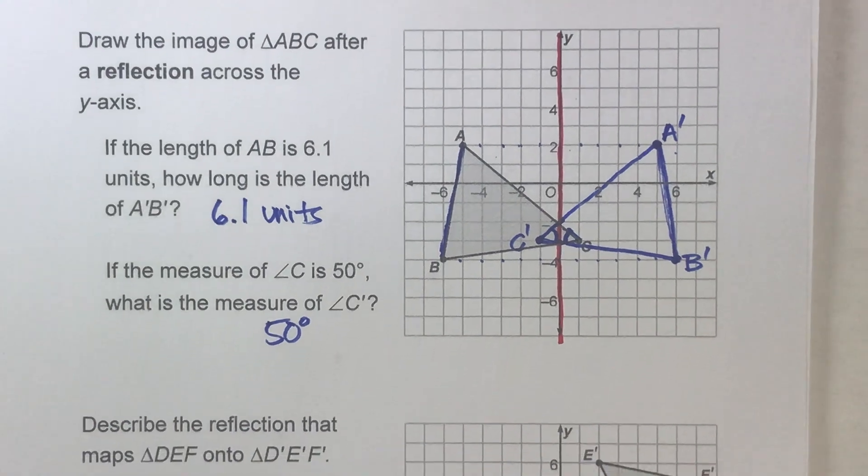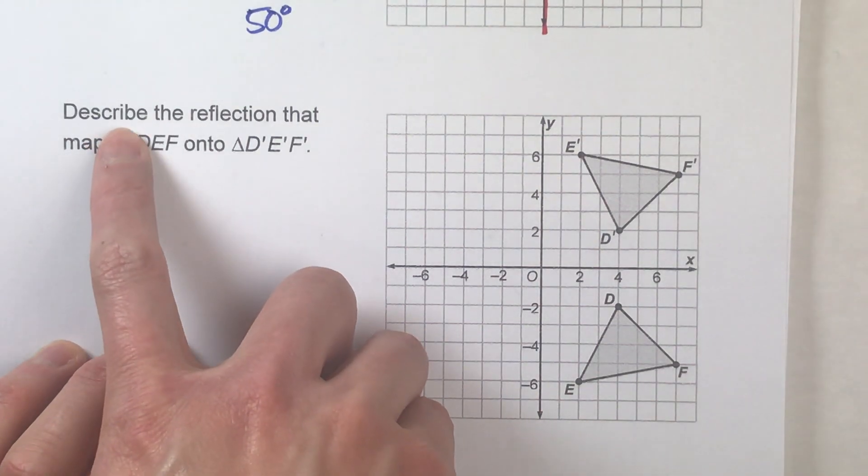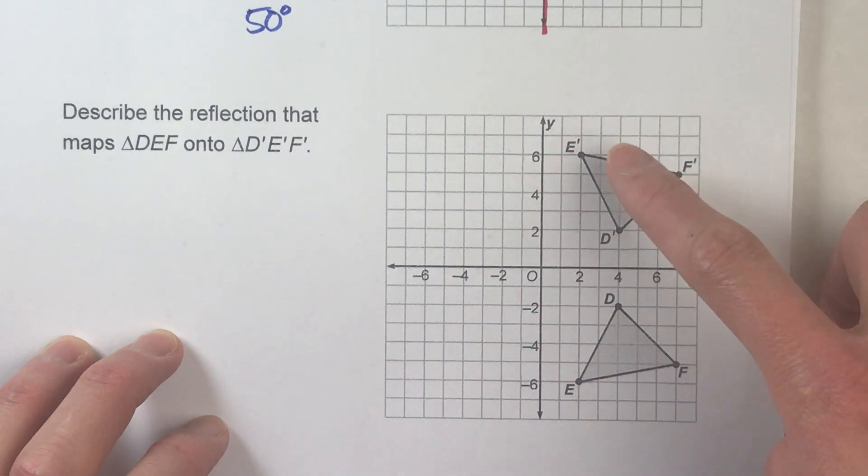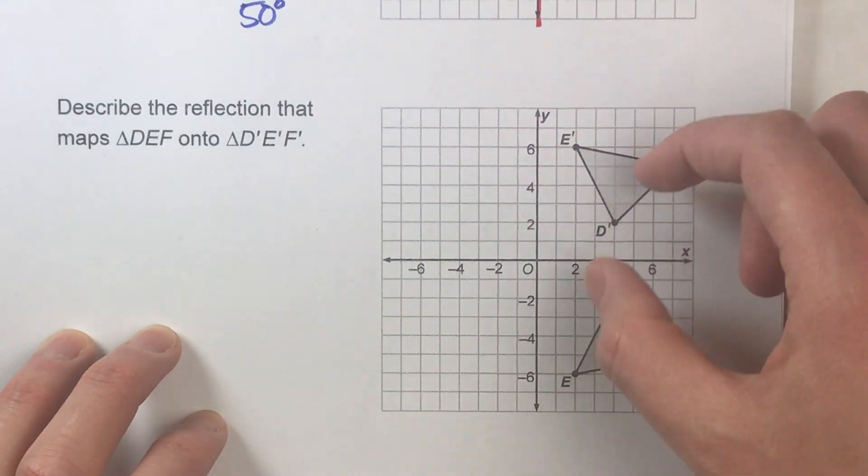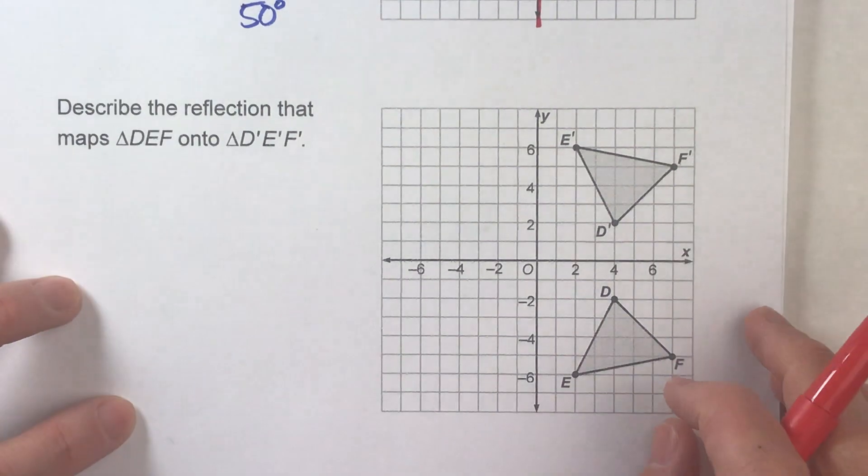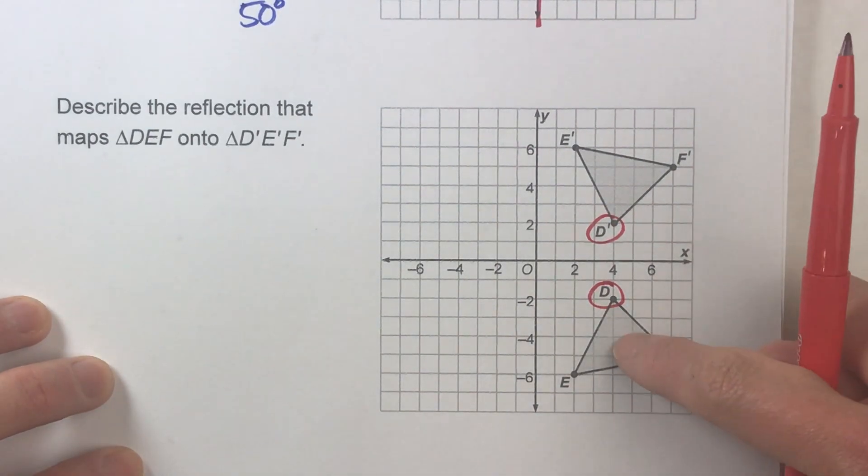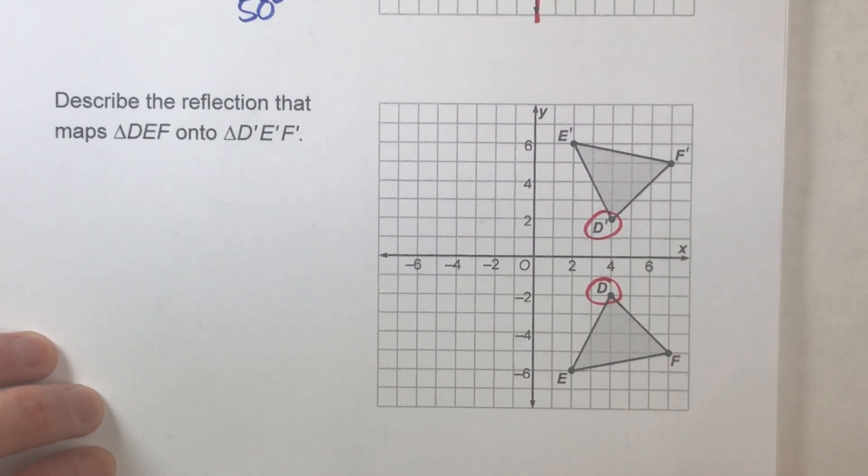So now, let's do a second example, but this time it's going to be the exact opposite. So notice, this time it says, describe the reflection that maps triangle DEF onto triangle D prime, E prime, F prime. So this time, I give you the image, the shape and its reflection, and what you have to do is describe what happened to it. So first thing you need to do is look for which one is the original and which one is the reflection. So notice, I've got D here, and I've got D prime here. So we know we started with this one, and then we ended up on that one.